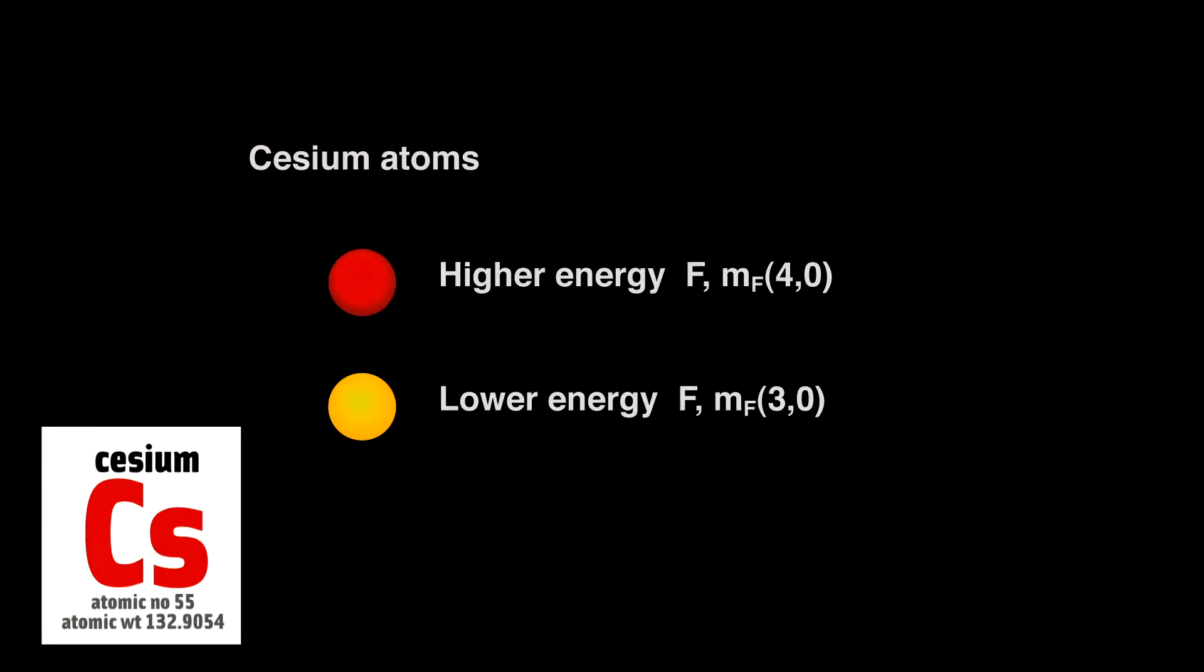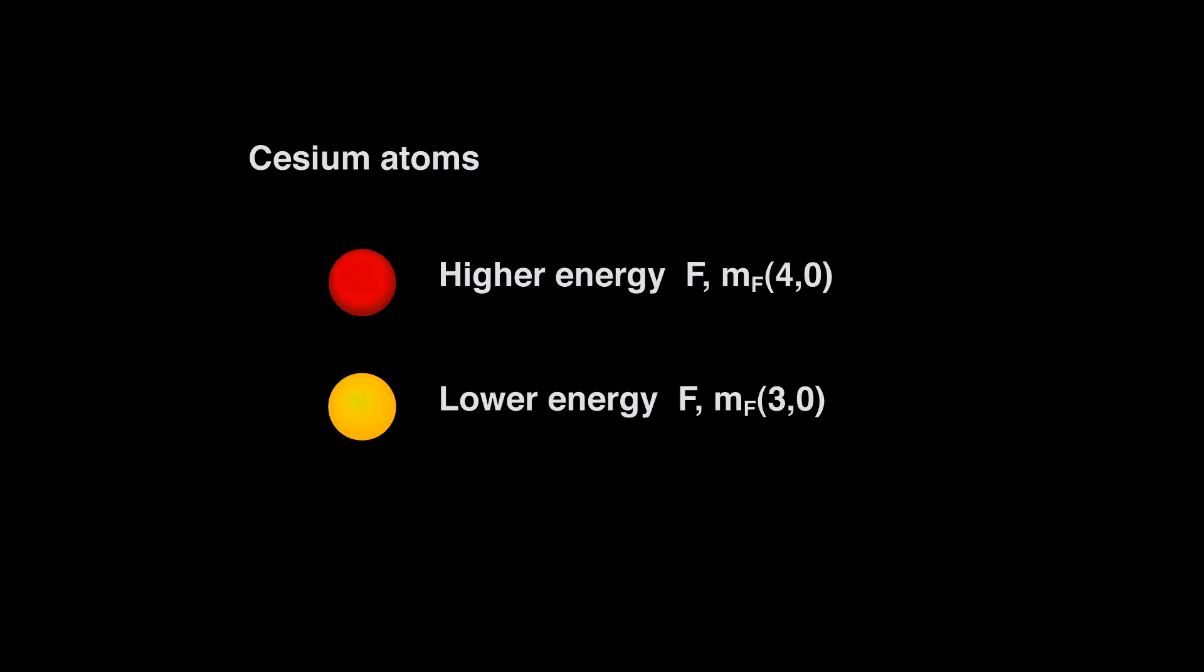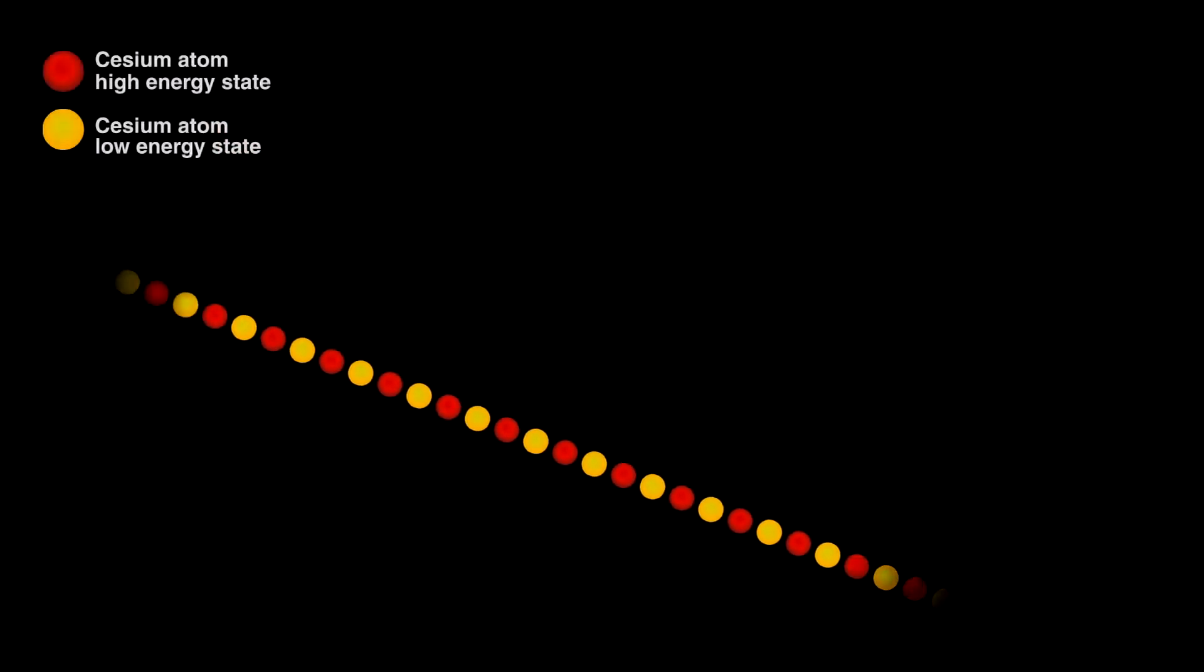The atoms in pure cesium exist mostly in two slightly different forms: a low energy form and one with just a bit more energy. For an atomic clock these two states have two properties critical to making a clock.